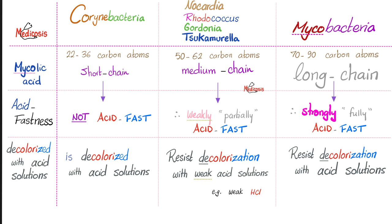Put differently, you take that organism, you add an acid solution to it, waiting for the organism to lose its color under the influence of the acid — and it will not happen. The bacteria will resist your attempt at decolorization by an acid solution, and I mean strong acid solution. How about the weakly acid-fast? They resist decolorization with weak acid solutions. Something that's not acid-fast will be decolorized — it will lose its color once you add the acid.